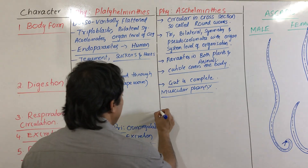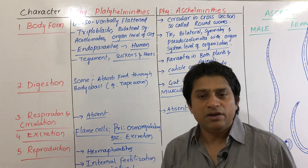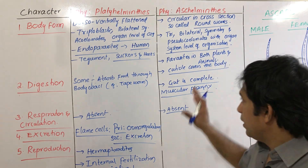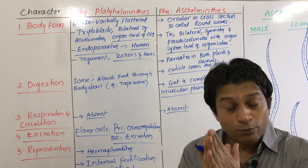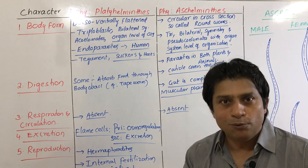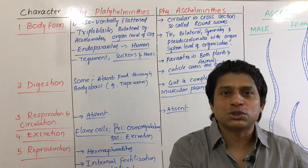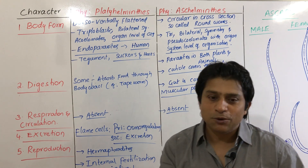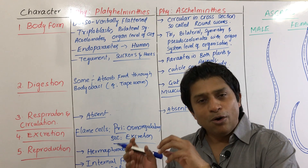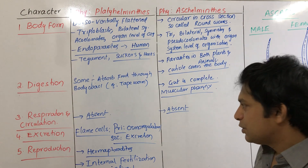Respiratory and circulatory systems are both absent in Aschelminthes. Endoparasites respire anaerobically, while free-living forms use simple diffusion. Since there is no circulatory system, all its functions are performed by the pseudocoelom — the pseudocoelomic fluid transports digested food materials, nitrogenous waste, and everything else.